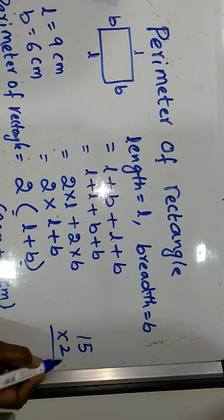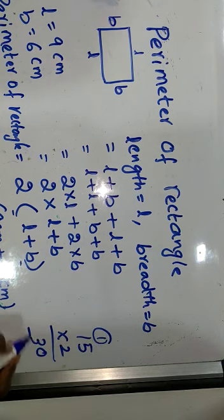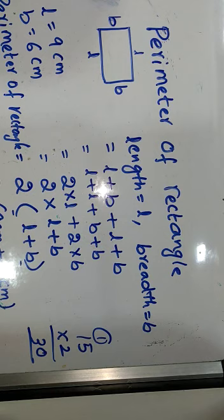What is 2 into 15? Let's multiply here, 15 into 2. 2 times 5 is 10, 2 times 1 is 2 and carry 1 makes 3. So it equals 30 centimeters.